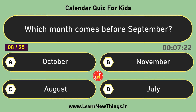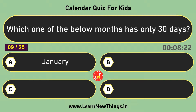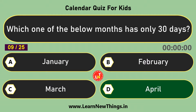Which month comes before September? August. Which one of the below months has only 30 days? April.